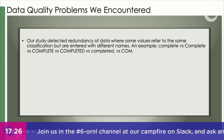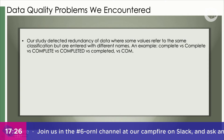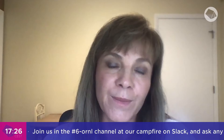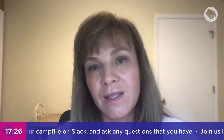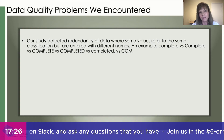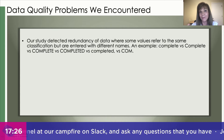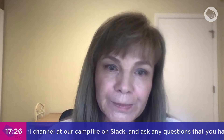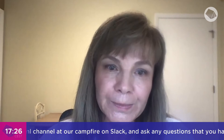Data quality problems our study detected: redundancy in data where some values refer to the same class but are entered with different names. For example, the word 'complete' is typed in small letters, then with capital letters, then all caps, then 'completed' in past tense, then 'COM' — all those refer to the same class. Also, daylight savings time can affect the analysis and impact process maps, so we need to pay attention to activities recorded during daylight savings time, since there are orders converging into a major system from several parts of the world.